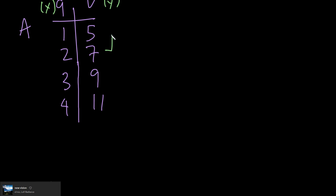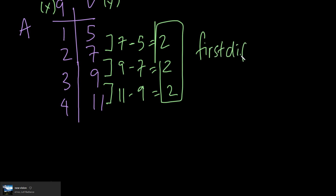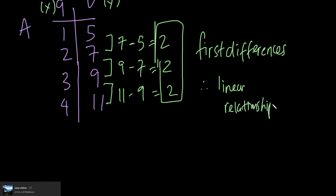So seven minus five equals two. Then nine minus seven also equals two. And eleven minus nine also equals two. These are our first differences. According to our knowledge about linear relationships, if the first differences are all the same value, it's going to be a linear relationship. So option A is a linear relationship — A is not our answer.